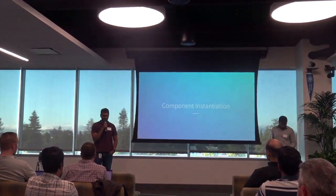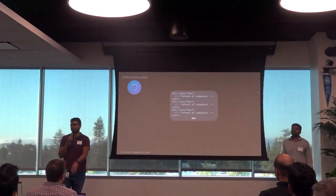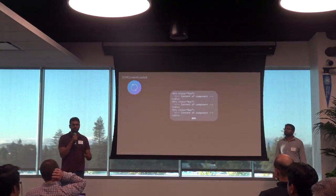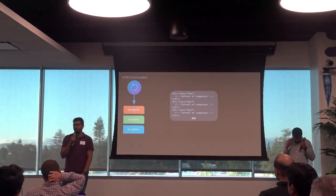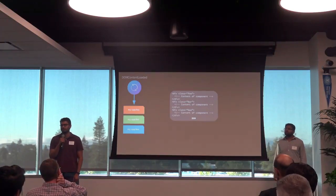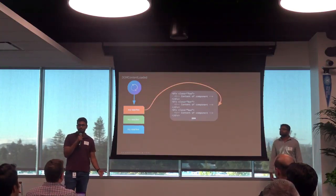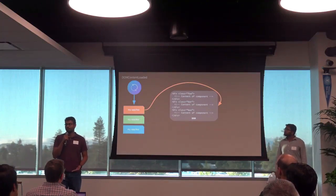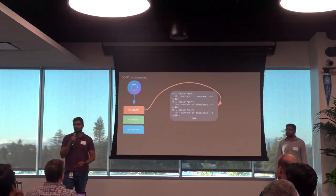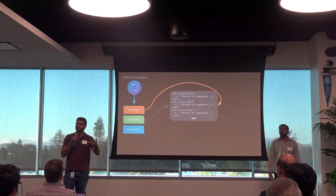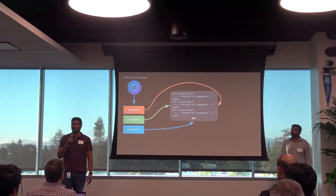Let's talk about component instantiation on the front end. In a typical scenario, the page loads, the DOM content loaded event fires, and your JavaScript starts executing. For example, foo, bar, and baz — three modules that run one after the other. Foo is responsible for finding the part of the DOM it owns, querying it, doing event bindings, DOM manipulations. Bar and baz do the same. But what about page updates? When new content loads via AJAX and the DOM changes, how do you re-initialize JavaScript for the new DOM?